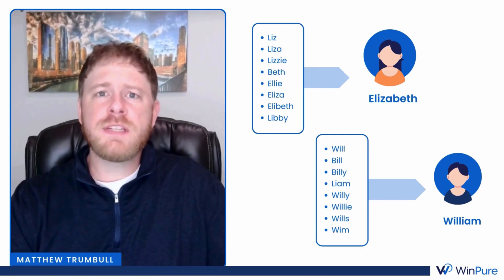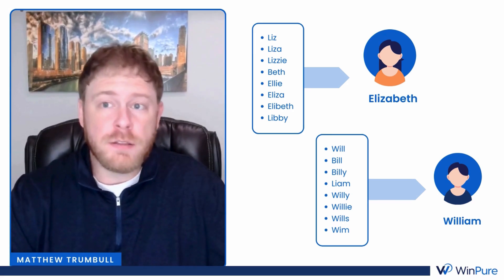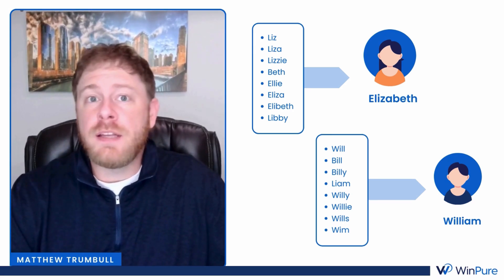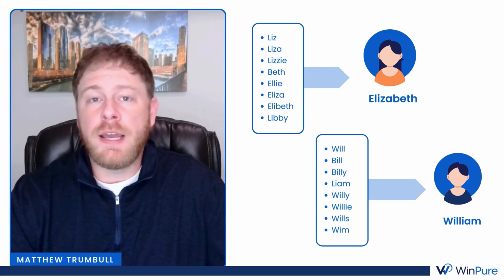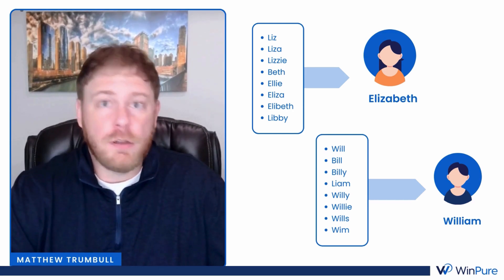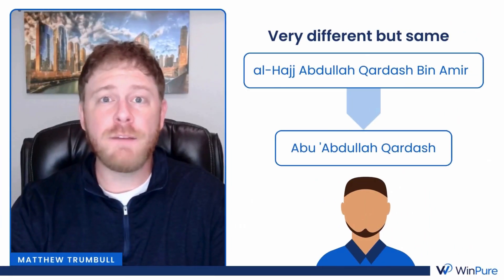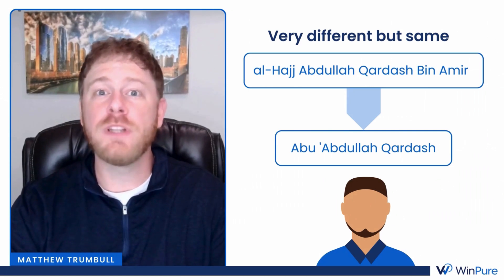We regularly see variations to common names like these. You may see Elizabeth put in as Liz or Beth, or you may see William put in as Bill or Will. But it doesn't stop with just the first name — globally we can see name variations that can be input in various ways, adding an extra layer to the difficulty in trying to match your records.